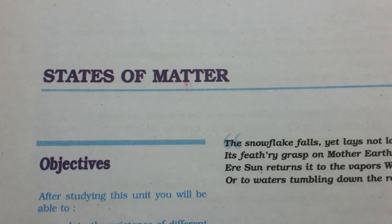5.5.4 Avogadro's Law: Volume-Amount Relationship. In 1811, Italian scientist Amedeo Avogadro combined conclusions of Dalton's atomic theory and Gay-Lussac's law of combining volumes, now known as Avogadro's law. It states that equal volumes of all gases under the same conditions of temperature and pressure contain equal number of molecules. This means that as long as temperature and pressure remain constant, volume depends upon the number of molecules of the gas. Mathematically: V ∝ n, so V = K₄ × n, where n is the number of moles of the gas. The number of molecules in one mole has been determined to be 6.022 × 10²³, known as Avogadro's constant.